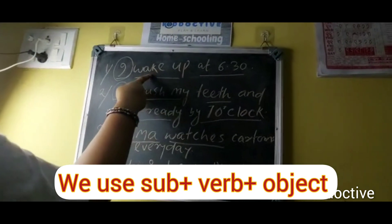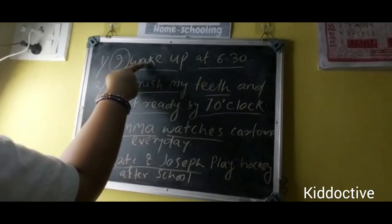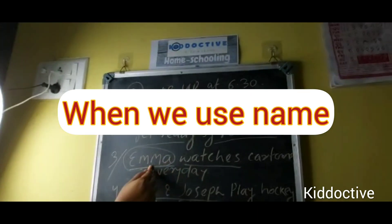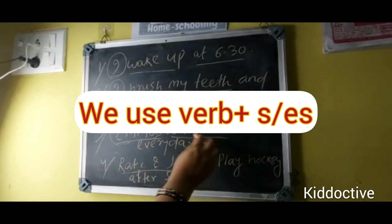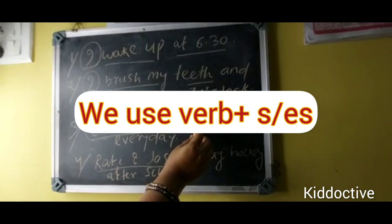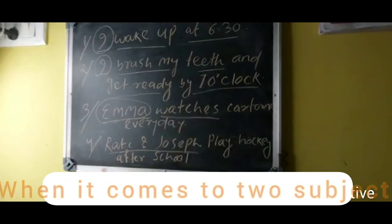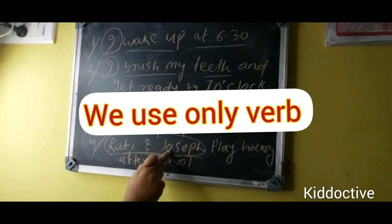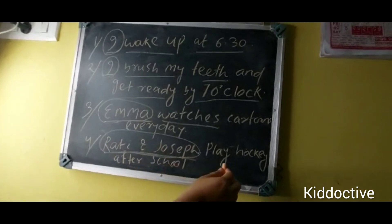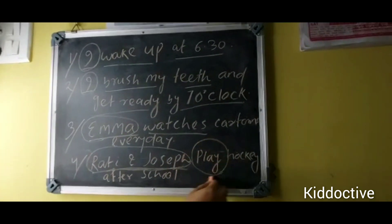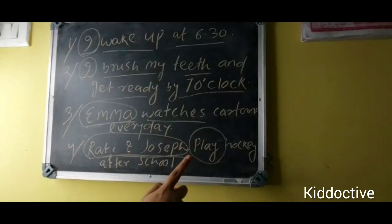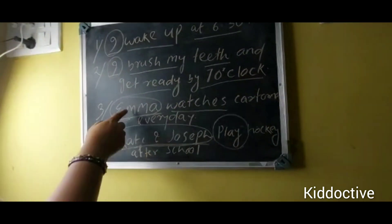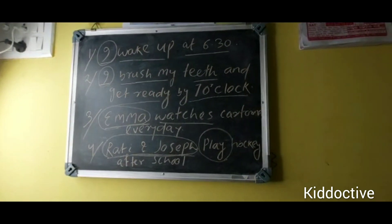With 'I', we are not changing the verb — the verb stays in its original form. But when we use a name like Emma, the verb takes 's' or 'es'. When there are two subjects, we do not say 'plays', only 'play', because the subject is plural. When the subject is singular, we use the 's' or 'es' form.